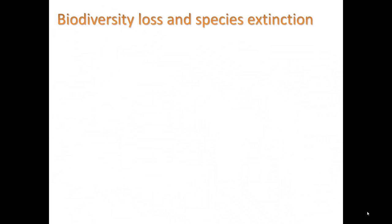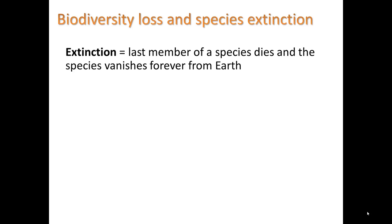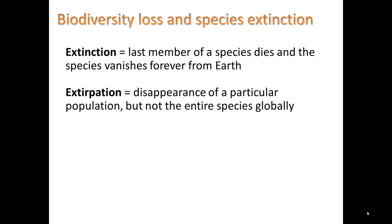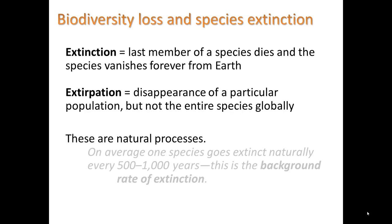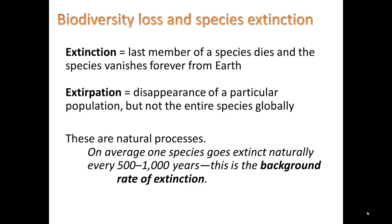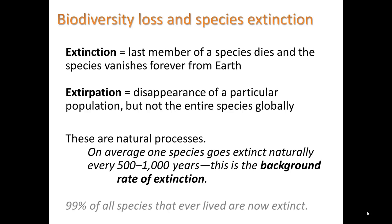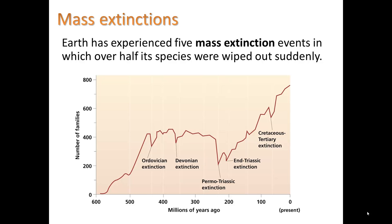Let's first take a look at biodiversity loss and species extinction. Extinction means the last member of a species dies and the species vanishes forever from Earth — a sad situation. Extirpation is a little less morose; it means the disappearance of a particular population, but not the entire species globally, so it is disappearing from only one location. These are natural processes. On average, one species goes extinct every 500 to 1,000 years, and this is the background rate of extinction. 99% of all species that ever lived are now extinct, according to geological evidence.